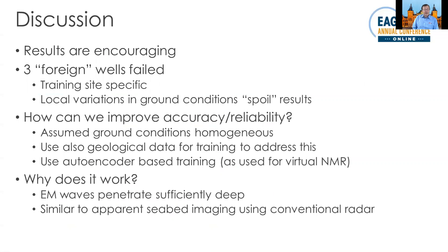I believe these results are quite encouraging. The three foreign wells failed pretty much as expected. The key question is how to proceed and improve. If the ground conditions are not entirely homogeneous, we could possibly get around this by incorporating geological data as input to the neural networks, though how to do this is not entirely clear. Also, this particular way of data fitting using a neural network is maybe not optimal.